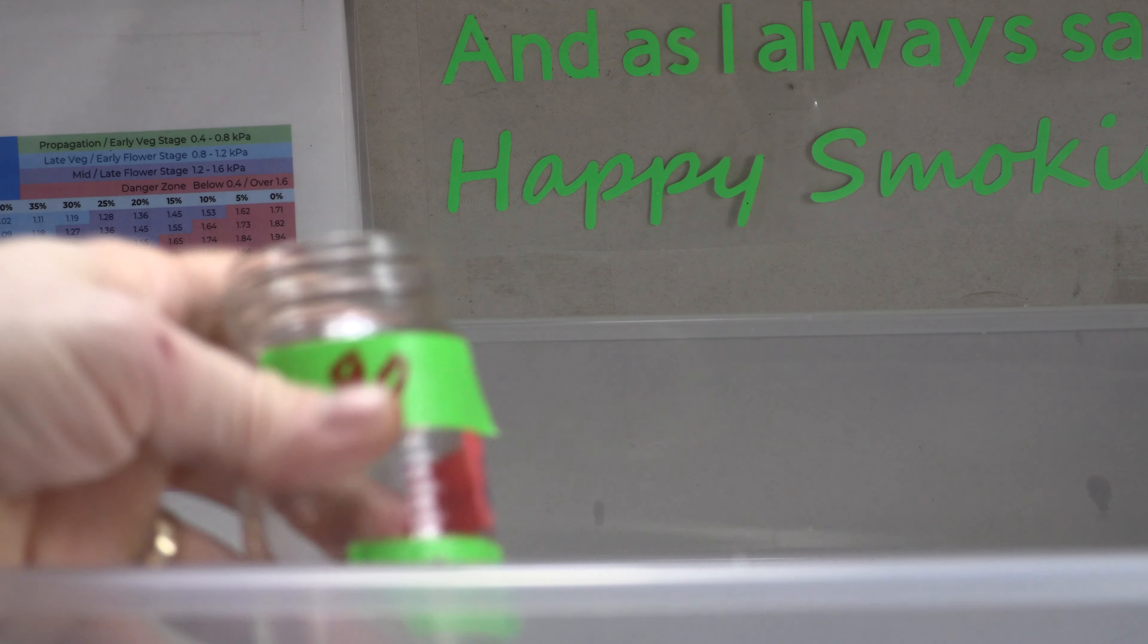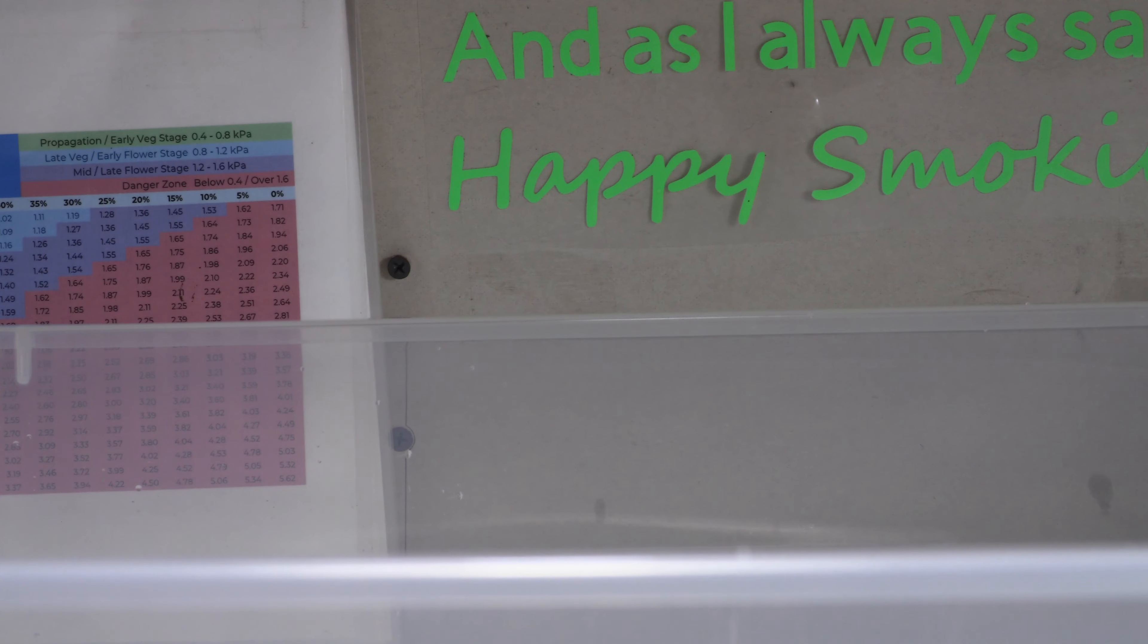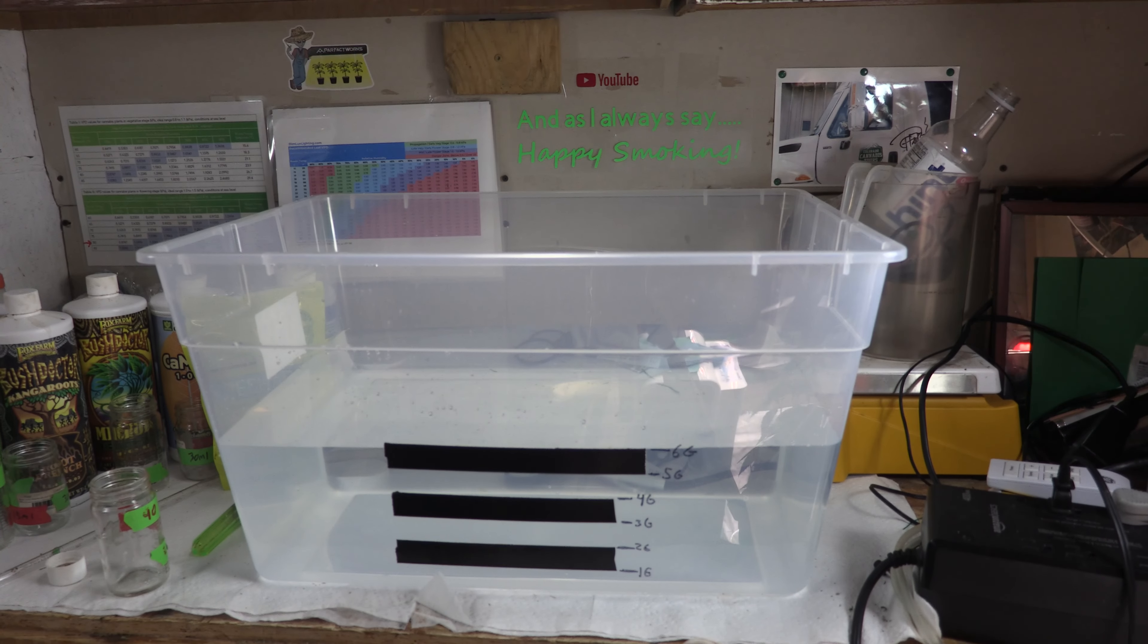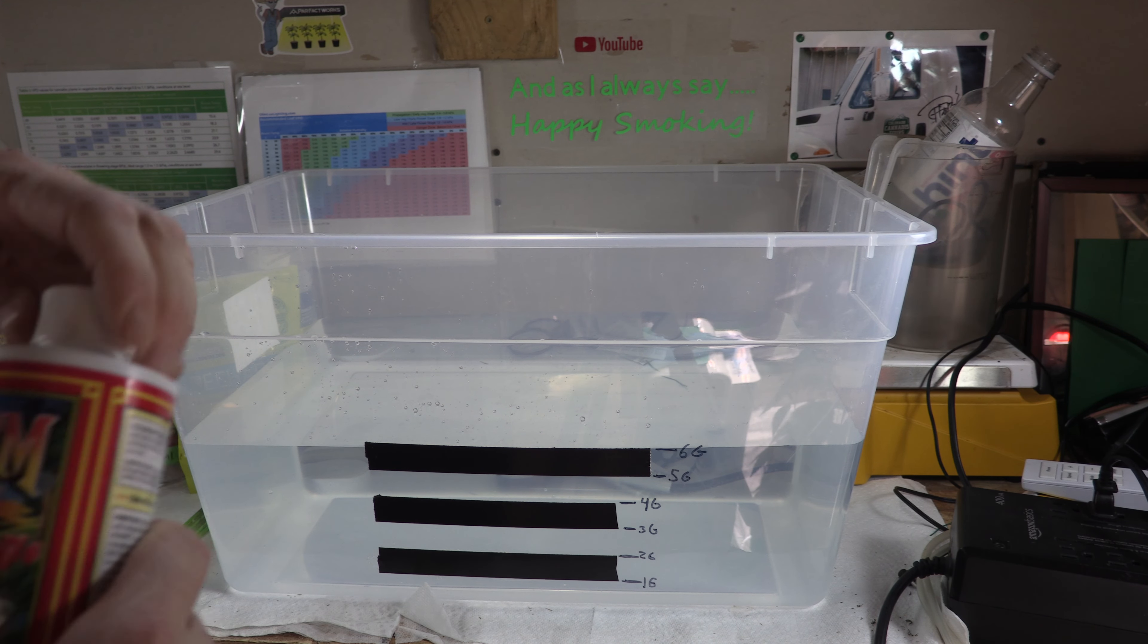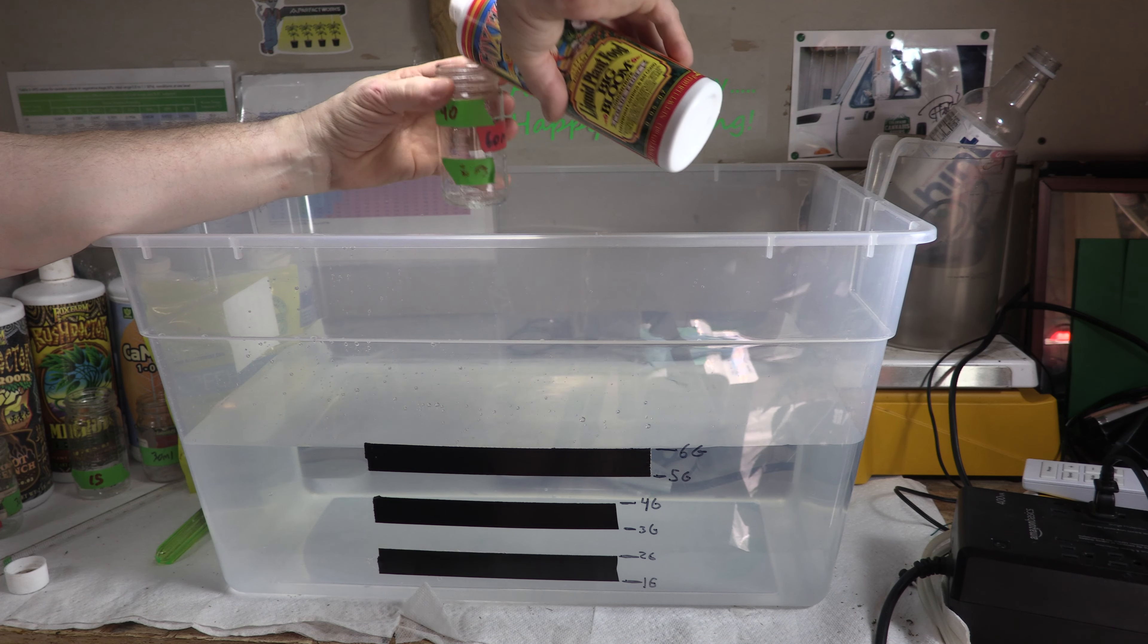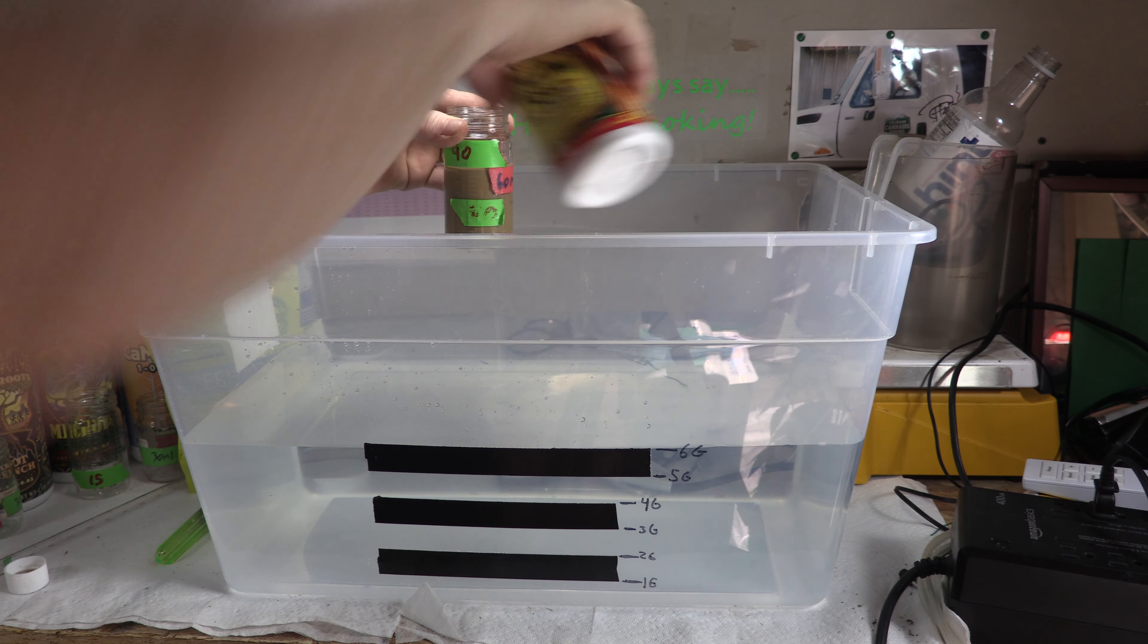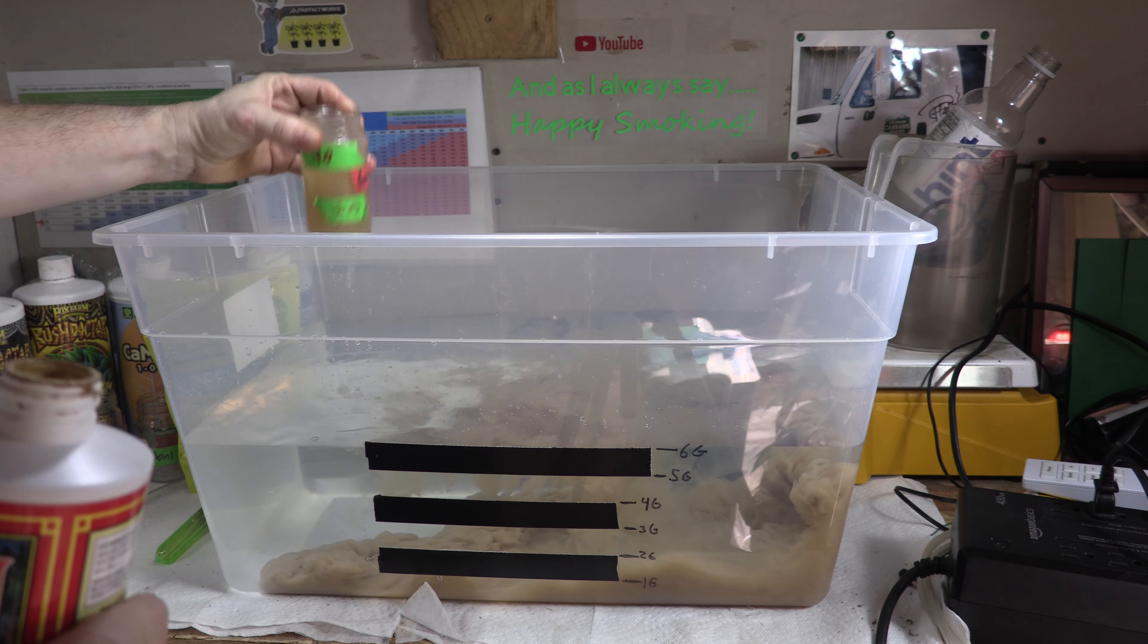Let's start right now. We'll start with 90 milliliters of Grow Big. I'm just going to back it up. And always make sure that you shake it up real good and get all the good nutrients out of it. Get it all mixed up. Here we go, 90. The tape sure makes it really nice. There we go, first one in.